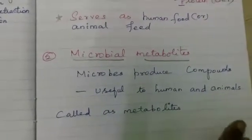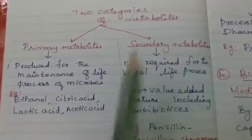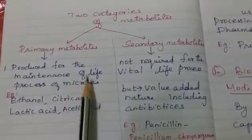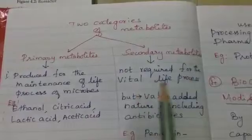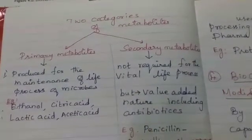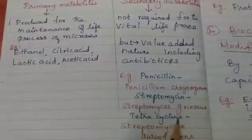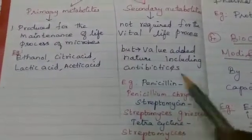The second application is microbial metabolites. Microbes produce compounds useful for humans and animals, called metabolites. Metabolites are divided into two categories: primary metabolites, produced for maintenance of life processes of the microbes — for example, ethanol, citric acid, lactic acid, and acetic acid — and secondary metabolites, not required for vital processes but valued in nature, for example, antibiotics like penicillin produced from Penicillium chrysogenum, streptomycin, and tetracycline produced from Streptomyces.